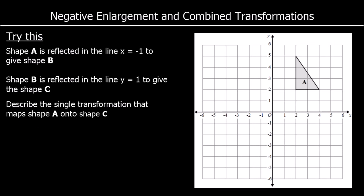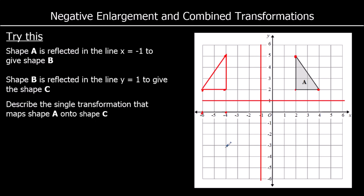Here's another one of these. Shape A is reflected in the line x equals negative 1 to get shape B. This point was 3 away so 3 away on the other side; this one was 3 away so 3 away; and this one was 5 away so 5 away on the other side. So that is shape B. Then shape B is reflected in the line y equals 1 to get shape C — all points where y equals 1 along this line. This point was 1 away so 1 away on the other side, and this one was 4 away so 4 away. So shape C is here.